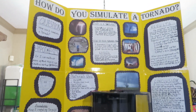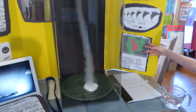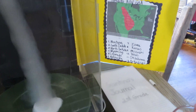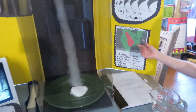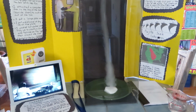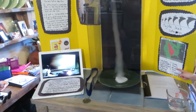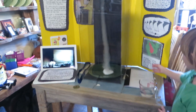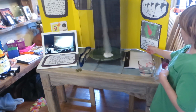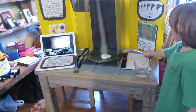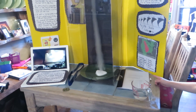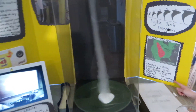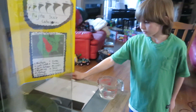This is the Tornado Alley of the USA. The red part is where most tornadoes happen, which is Tornado Alley. The states in Tornado Alley are Montana, South Dakota, North Dakota, Wyoming, Colorado, Nebraska, Iowa, Kansas — where the Wizard of Oz tornado was — Missouri, Texas, Oklahoma, and Arkansas. My grandparents live in Texas.